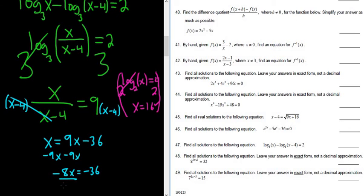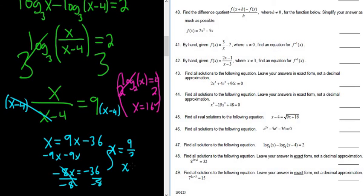Divide both sides by negative 8. So we get x equals — it's a fraction. 4 goes into 36 nine times, and into 8 two times. So x equals 9 over 2.